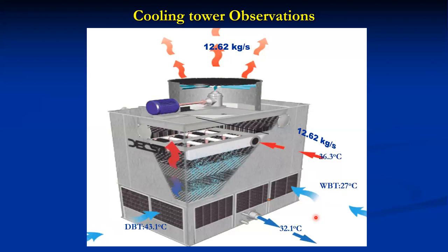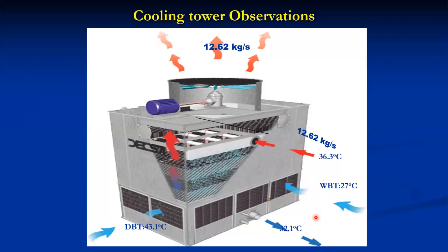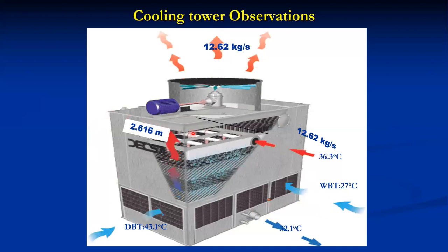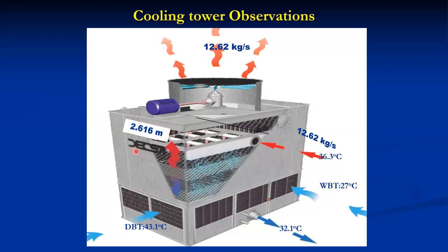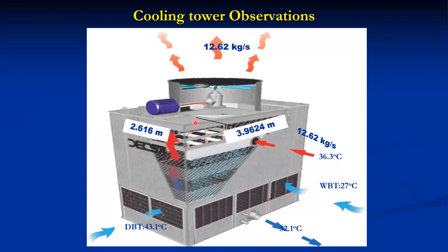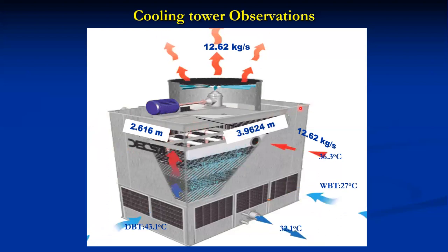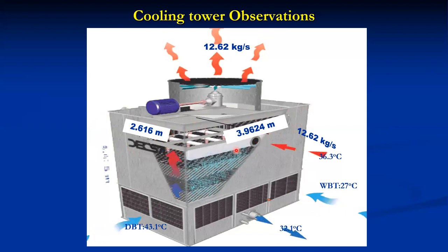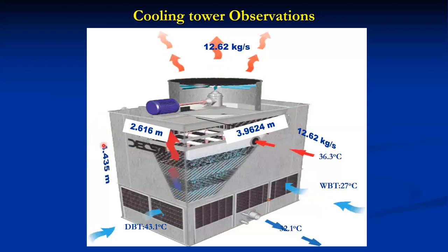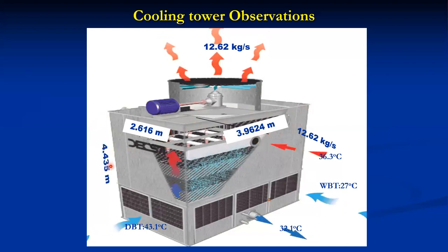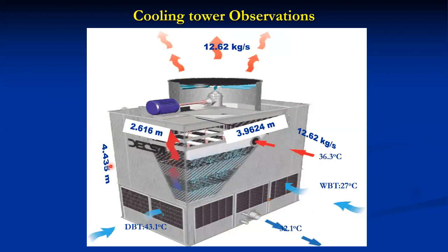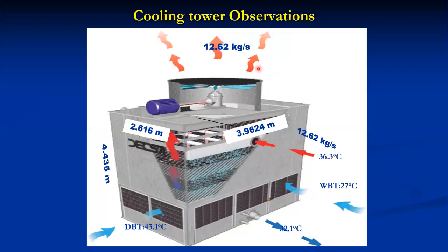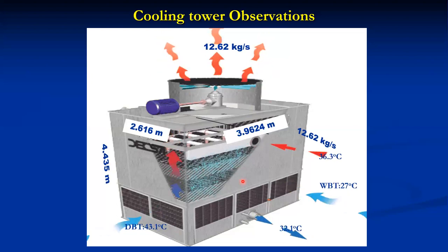Geometric parameters are also required in order to calculate the volume of the cooling tower. Width = 2.616 m, length = 3.9624 m, and height = 4.435 m. These parameters are required for calculating the performance coefficient.